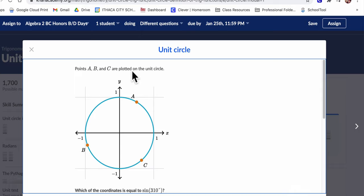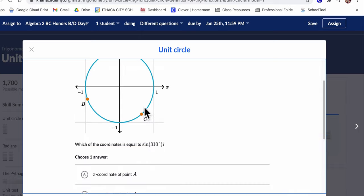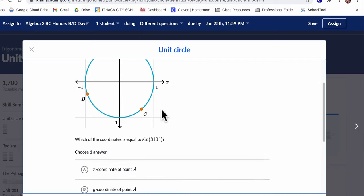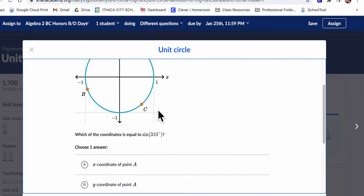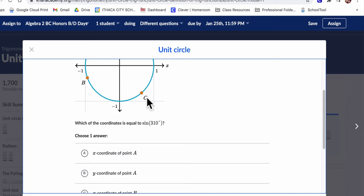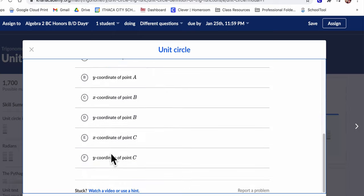Points a, b, and c are plotted on the circle below. Which of the coordinates is equal to the sine of 310? So in other words, which of these angles, if you had an angle of 310, so here's about here, angle c, right? The y value of that point would be the sine of 310. The x value would be the cosine of 310. So, and that's the only point here that corresponds to a 310 degree angle. So it's the y coordinate of point c.